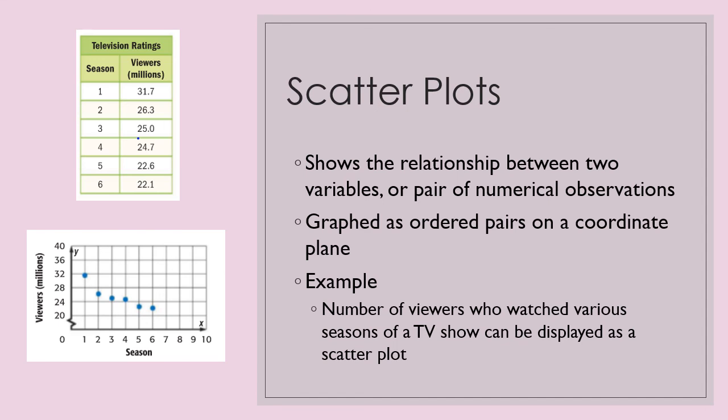So we can look at the data and say, well, season one did very well. Season six, obviously we dropped. Should we continue it? Should we continue with the season seven? Or should we just drop the TV show in general? When we are working with scatterplots, we're going to graph them as ordered pairs on a coordinate plane. So this example here is using the data from the table up above.